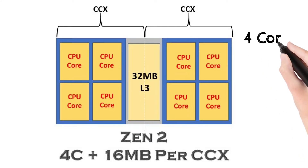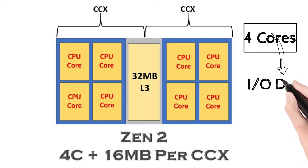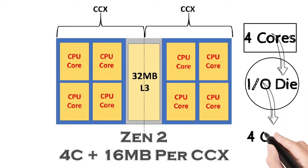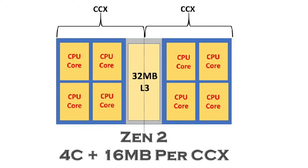Whenever one set of 4 cores has to communicate with another set of 4 cores, it has to leave the CPU, go to the IODi, and communicate with the cores, then return.